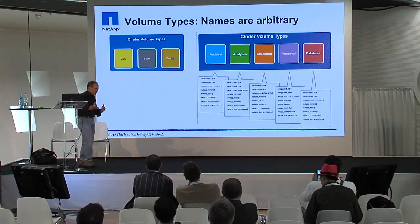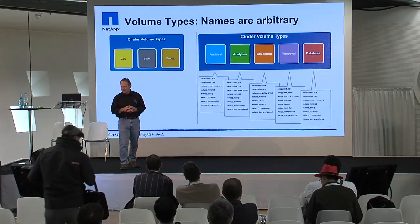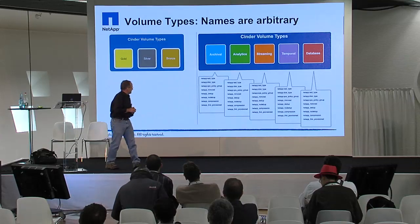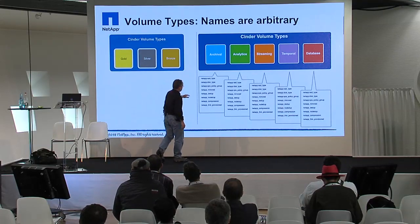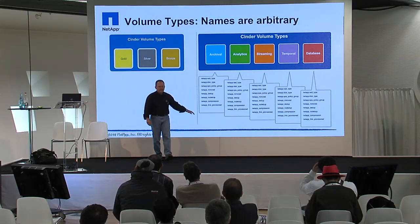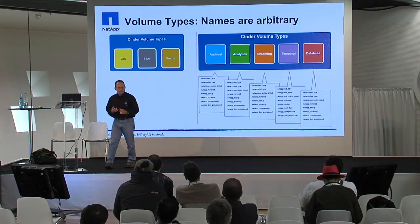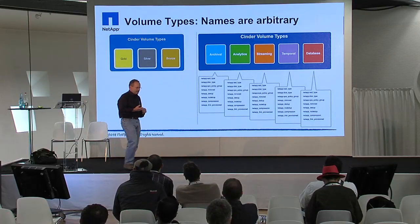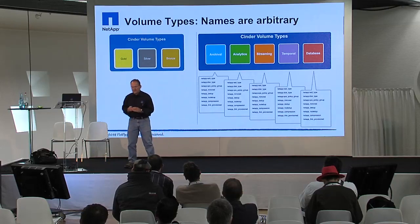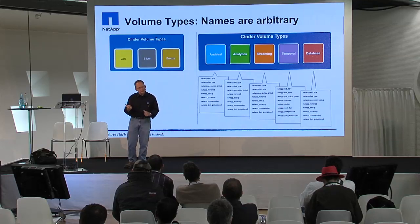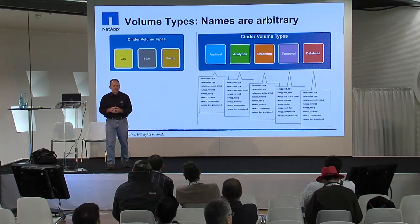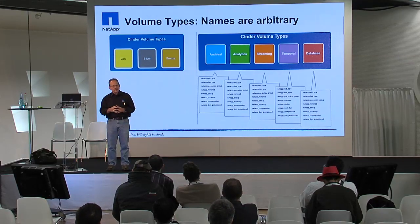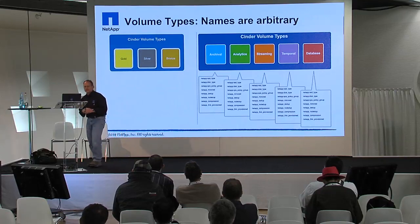Volume types are arbitrary — there's no set rhyme or reason, it's whatever you want them to be. You have the ability to use different types of NetApp extra specs specific to our driver: RAID type, disk type, quality of service, thin provisioning, compression, and deduplication. We surface up that technology through the driver through extra specs, and that's how we bring that to bear. The cloud administrator and tenants can use those accordingly.